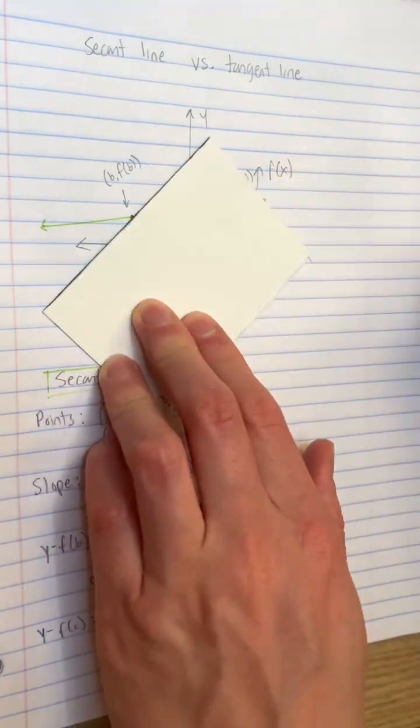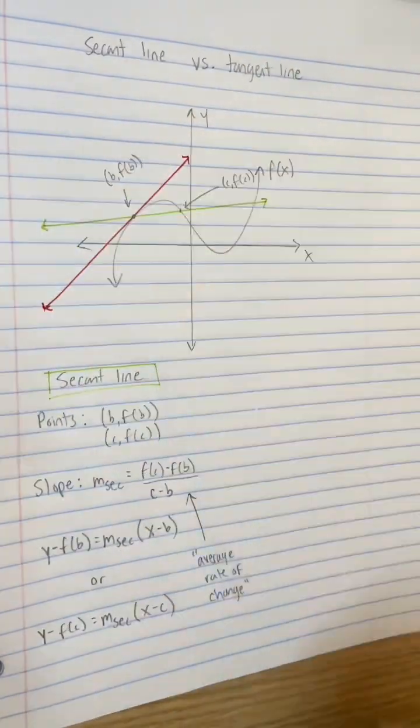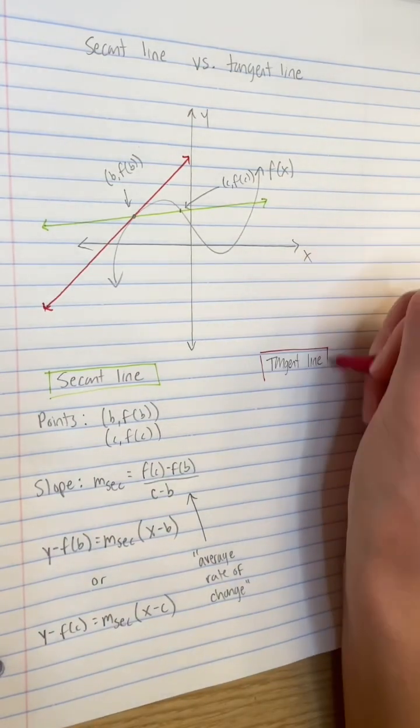This is different from a tangent line which touches just one point on f of x and no points around it. I'll use b comma f of b.